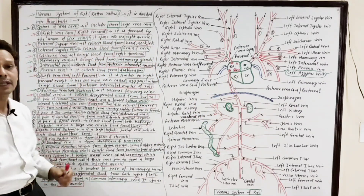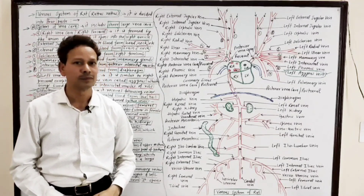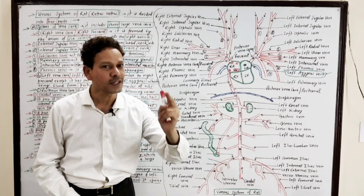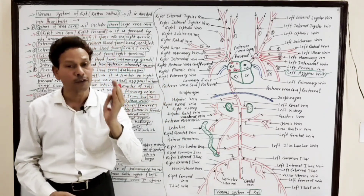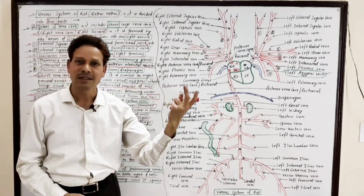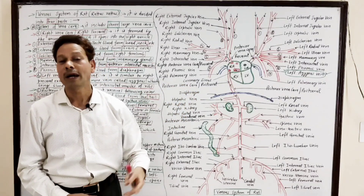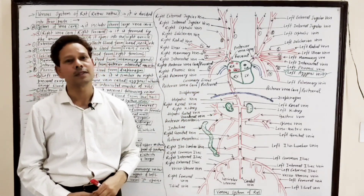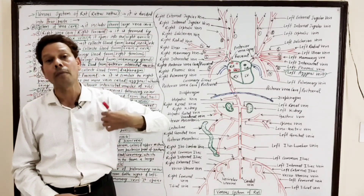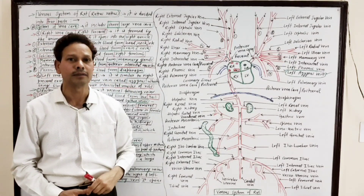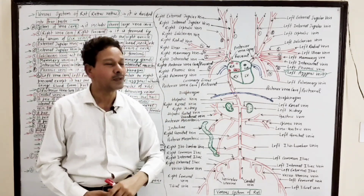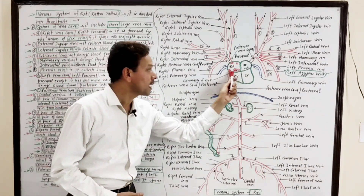The third system is the coronary system. In this coronary system, deoxygenated blood from the heart is collected via several coronary veins. These coronary veins collect blood from the entire wall of the heart and unite to produce a coronary sinus.